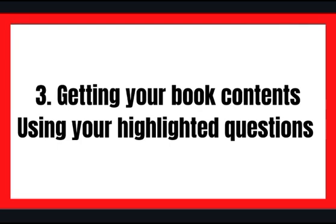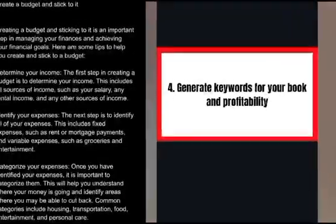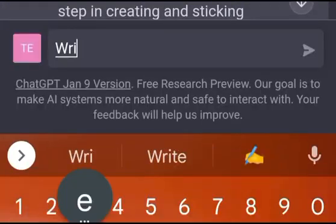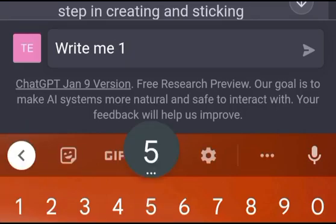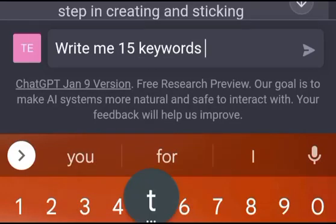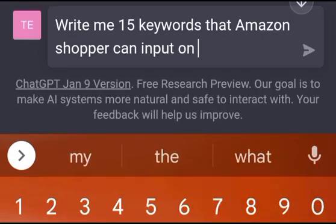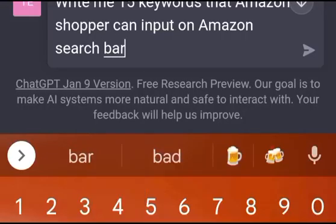We've shown how to generate content for your book using AI by asking highlighted questions to Chat AI to generate content for topics and subtopics. The next step is to generate keywords for your book and check for profitability. You can use Chat AI to generate the keywords — the kind of keywords that shoppers on Amazon can easily type — so let's go back to Chat AI to see how to generate keywords.